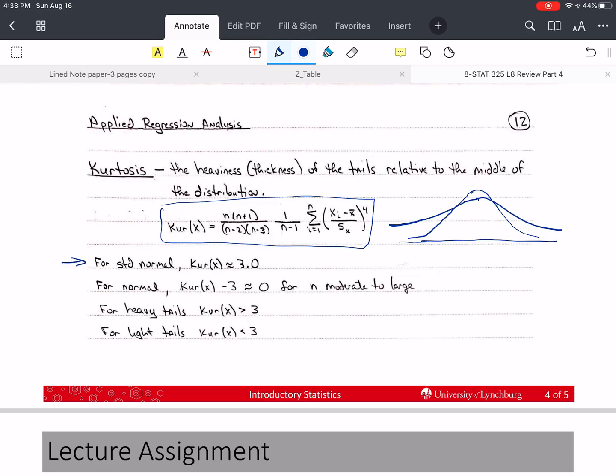The important thing to know is that for a standard normal, the kurtosis should be around three. For a normal distribution, kurtosis should be close to zero. Kurtosis minus three should be close to zero. For heavy tails, kurtosis is greater than three. For light tails, it's less than three. So that is a measure of how thick or skinny the tails are. A measure of kurtosis of three says the tails are about the same for a normal distribution.